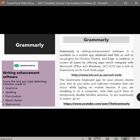The last software is Grammarly, also freely available from the ICTS Cool Tools page. This is writing enhancement software that scans text you are typing, detecting mistakes in grammar, spelling, punctuation, word choice, and style errors. It is available as a mobile app and via plugins for Chrome, Firefox, and Edge, and offers apps that integrate with Microsoft Office and Windows. The Grammarly keyboard app for your phone checks text as you write. Note that if installing on a computer, you'll need to temporarily disable McAfee antivirus. A YouTube link is included to see Grammarly in action.